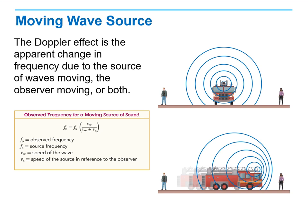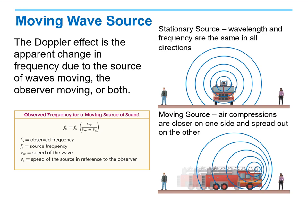Now, we will discuss the meaning of each variable in our lesson. With a stationary source, wavelength and frequency are the same in all directions, but when the source is moving, air compressions are closer on one side and spread out on the other side.